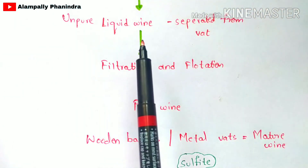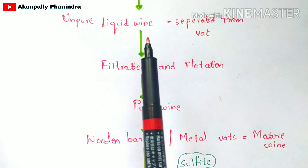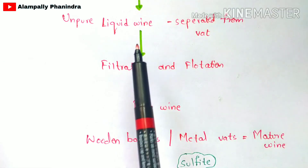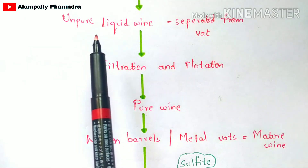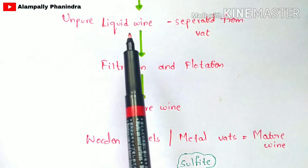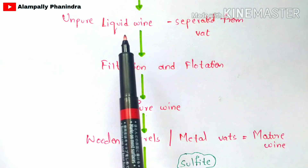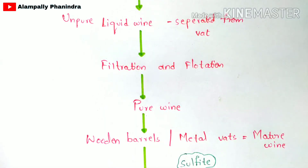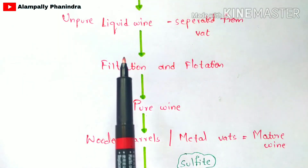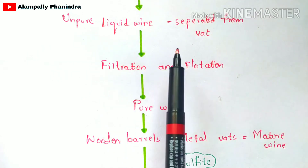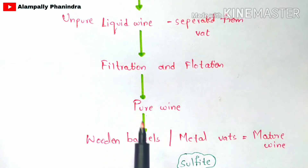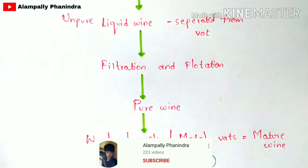Once the fermentation process is complete, an impure liquid wine — the secondary metabolite — is obtained from the outlet of the fermentation tank. This impure liquid wine also contains vat, an unwanted material, which is separated from the wine. The separated liquid wine then undergoes filtration and flotation to remove impurities, resulting in pure wine.